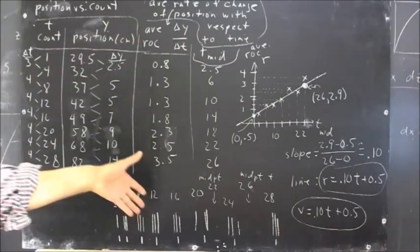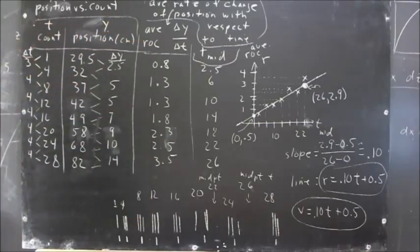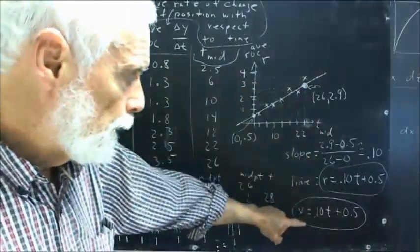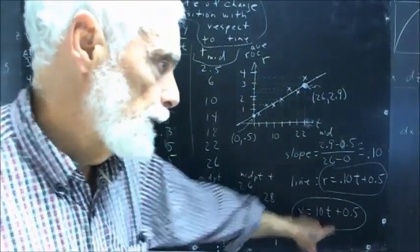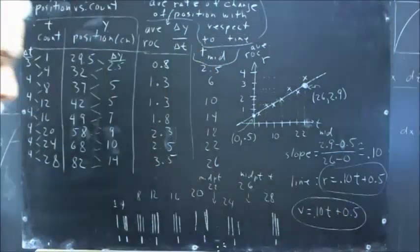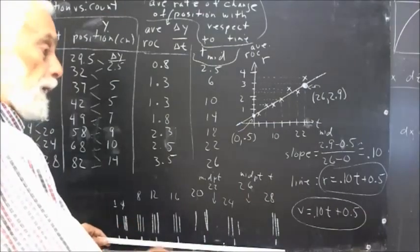We get average rate of change of position with respect to clock time. We graph that. We do a best fit to that and interpret that as a velocity function that tells us the speed of the ball as a function of time.